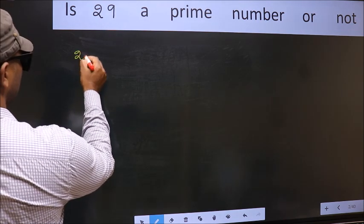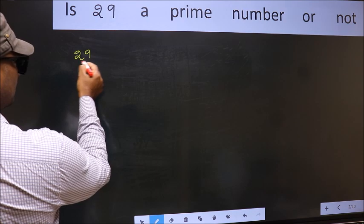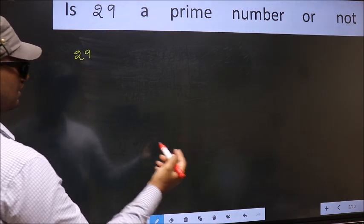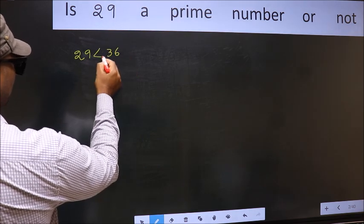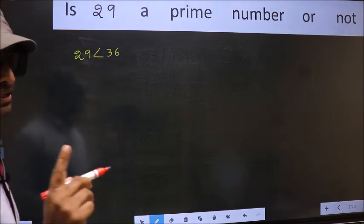Given number is 29. This is close to which perfect square? This is close to 36. This is your step 1.